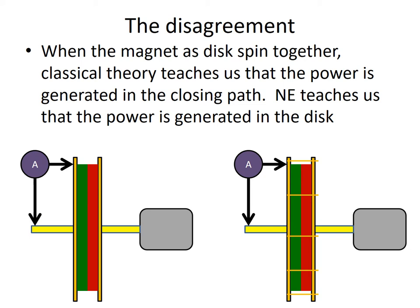Just recovering and rehashing what the problem is in classical electromagnetic theory: this is a motor that rotates a magnet, and these are conductive discs. We're only using the left-side conductive disc, because classical theory says that since the magnet and the disc rotate together there's no relative motion and therefore no energy can be developed from the disc. They contend that the rotating magnetic field couples with the closing path, and that's where the energy is created. In new electromagnetism it says that the power is generated in the discs, and this concept that there has to be relative motion between the disc and the magnet is baloney.